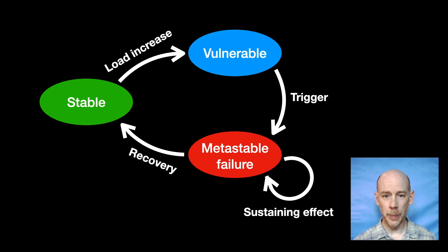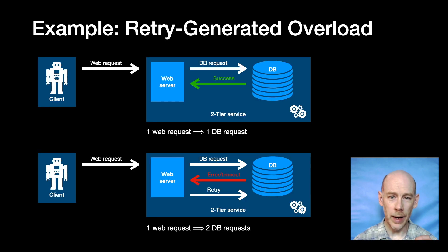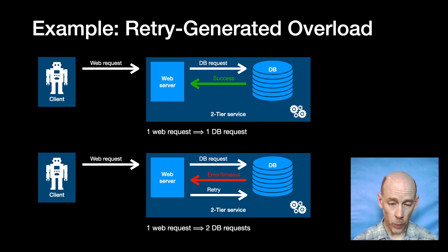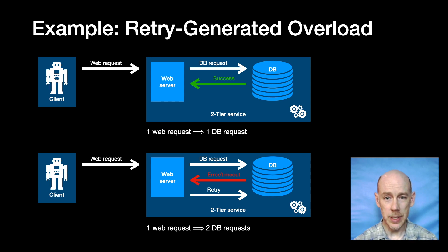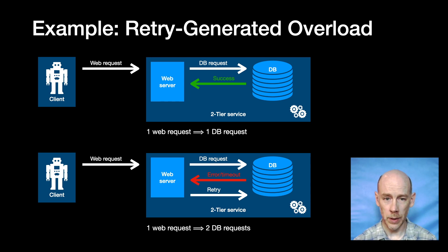Let me illustrate the pattern with a simple example. We have a service made of a stateless web server and a database, where the web server does one database query to satisfy one web request. The web server will retry the database query once if it fails. So when the database is healthy, one request from the client corresponds to one request to the database, and if queries are failing, we have a work amplification factor of two — one client request turns into two database requests.